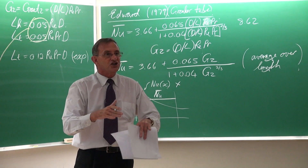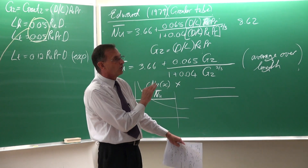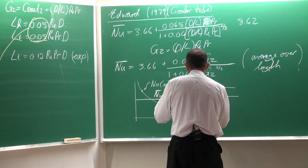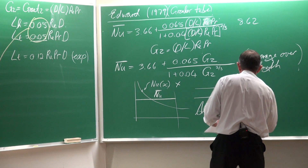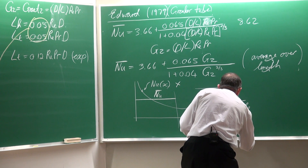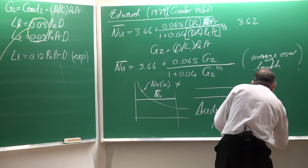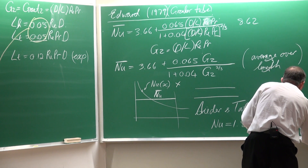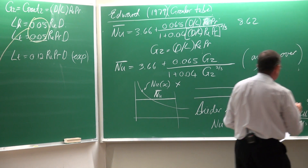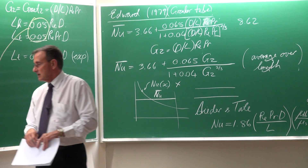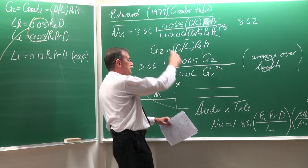In the textbook there is also an equation for flow between two flat plates with a constant wall temperature. And then the last equation given is the so-called Sieder and Tate equation. The Nusselt number equals 1.86 multiplied by Reynolds times Prandtl times D divided by L, then multiplied by the bulk viscosity divided by the surface viscosity to the power 0.14.